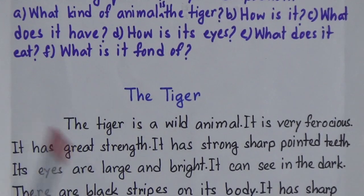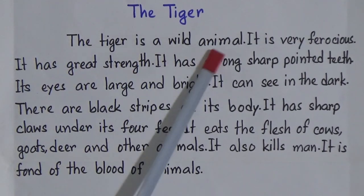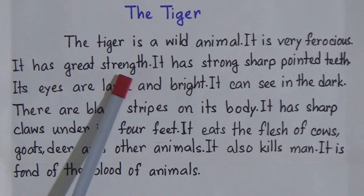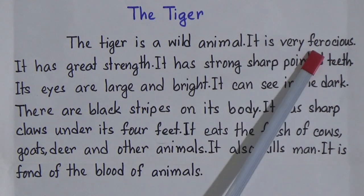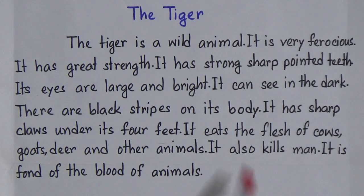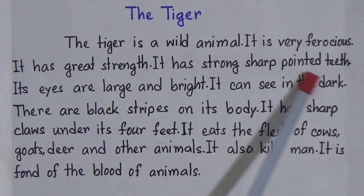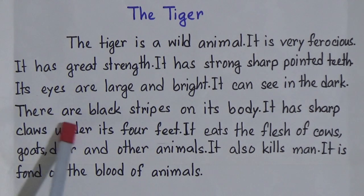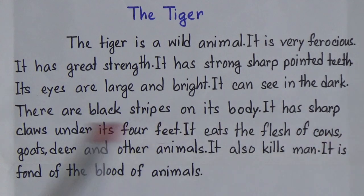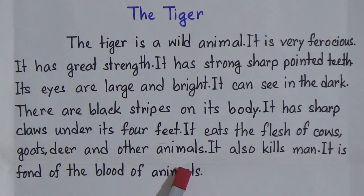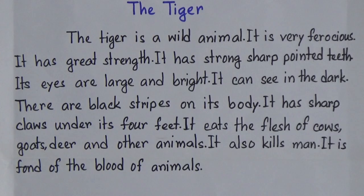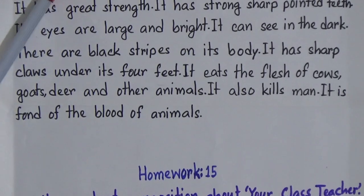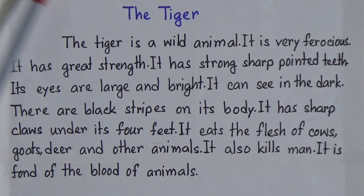The tiger is a wild animal. It is very powerful and very dangerous. It has great strength and strong, sharp, pointed claws. Its eyes are large and bright; it can see in the dark. There are black stripes on its body. It eats the flesh of cows, goats, deer, and other animals. It also kills man. It is fond of the blood of animals.